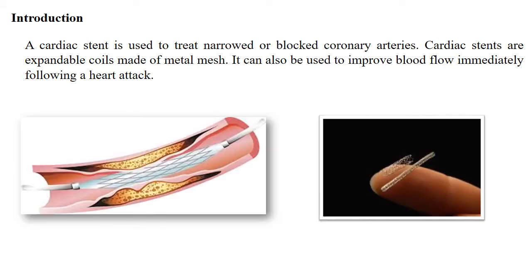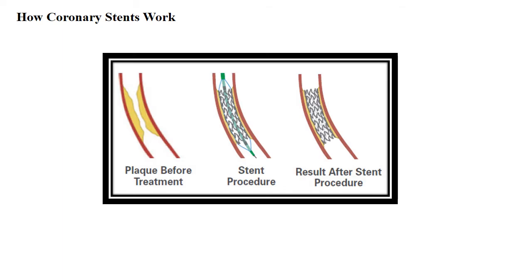Next is how coronary stents work. In this diagram we can see the schematic presentation of a coronary stent and insertion — before insertion, the plaque is on the wall of the artery, then the stent procedure, and then the result after the stent procedure. Coronary stents are small wire mesh tubes that restore adequate blood flow to the heart.